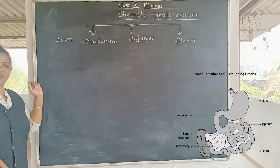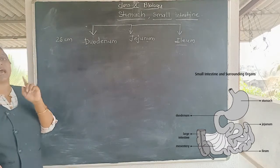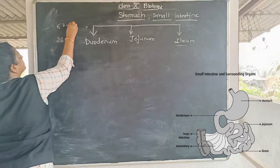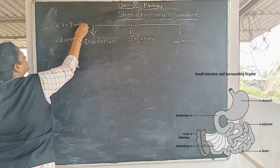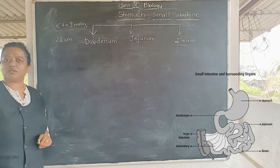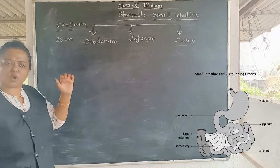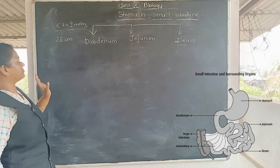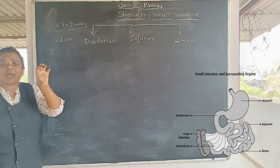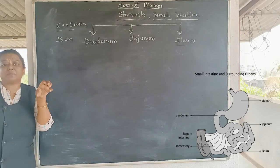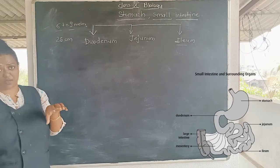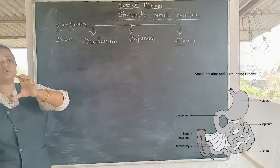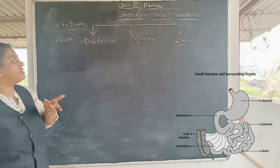The combined length of the large and small intestine is about 6 to 9 meters. It is tightly and compactly kept in the abdominal compartment in a coiled form. The small intestine is too long compared to other parts of the alimentary canal and is kept in coiled form within the abdominal cavity.